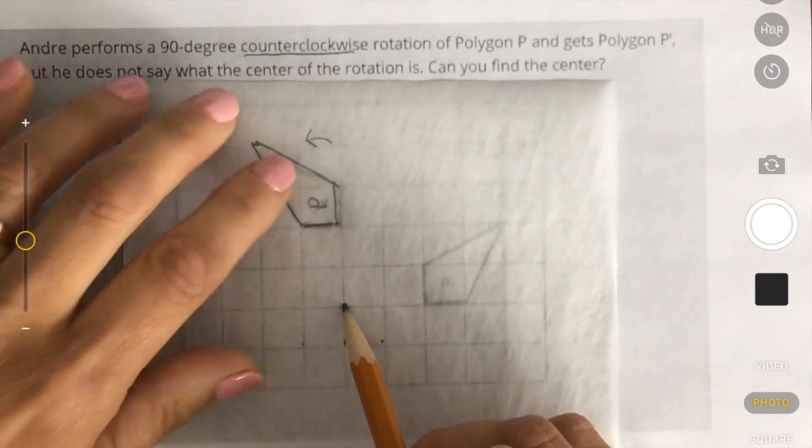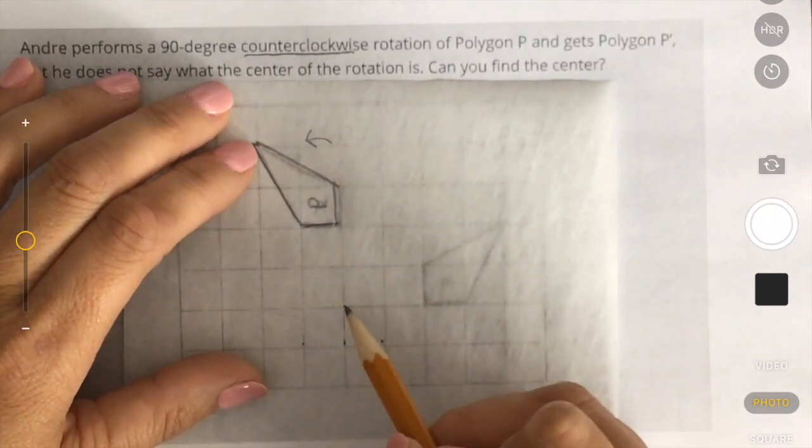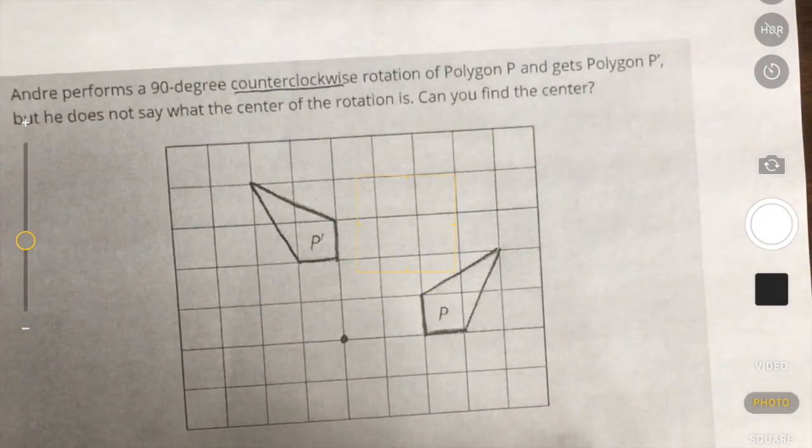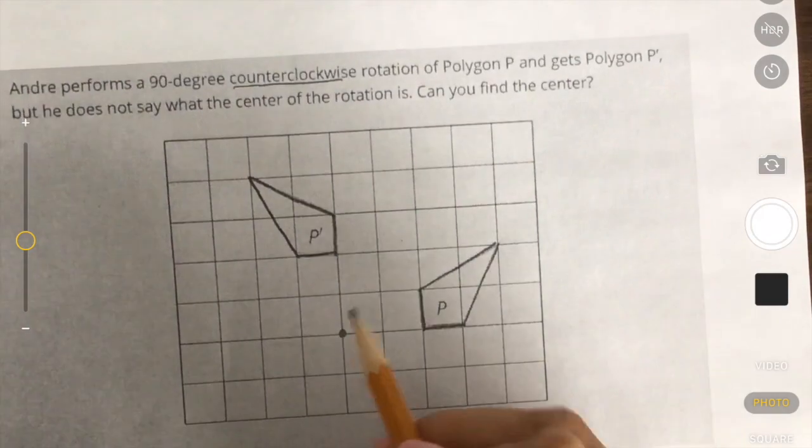And we rotate 90 degrees. It lines up perfectly. So our point is right here, between them.